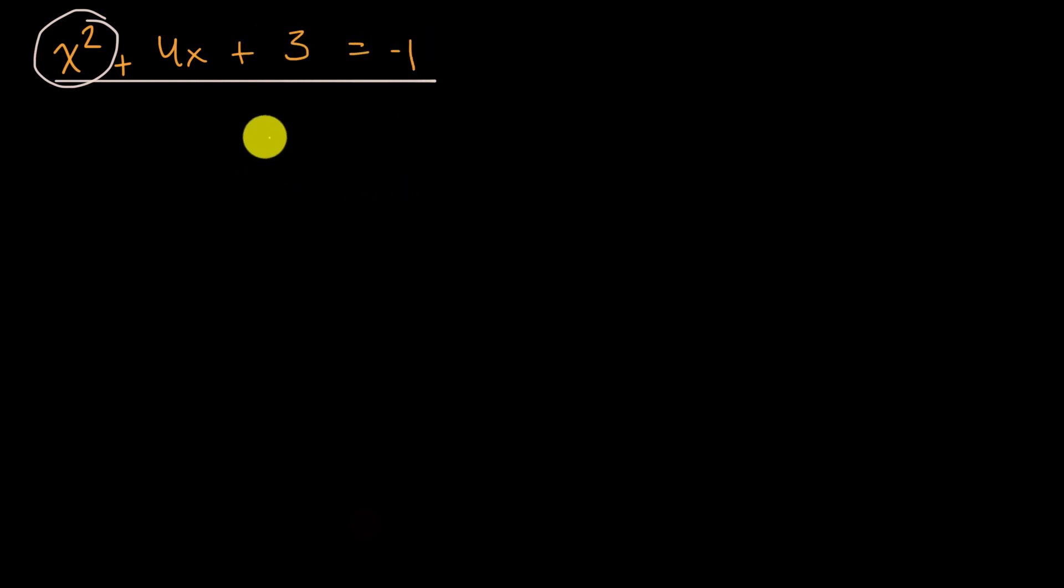So one strategy that people might try is, I have something squared, why don't I just try to take the square root of both sides? And if you did that, you would get the square root of x squared plus four x plus three is equal to the square root of negative one.